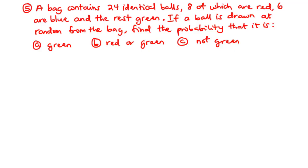Let's solve question 5 of November 2021 Mathematics Paper 2. A bag contains 24 identical balls: eight of which are red, six are blue, and the rest green. If a ball is drawn at random from the bag, find the probability that it is: a) green, b) red or green, and c) not green. This is a very simple problem.